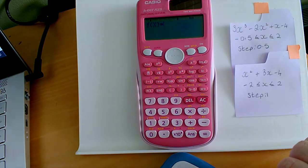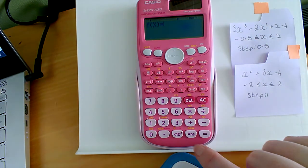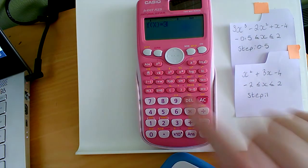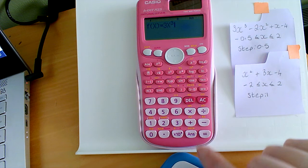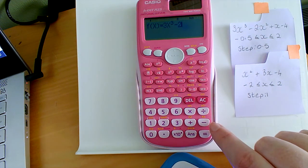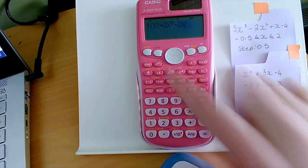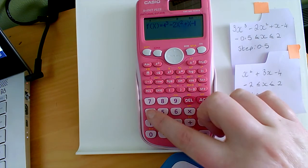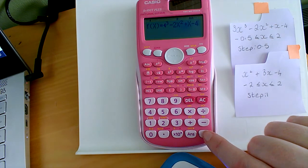You'll see f of x equals pops up, so that's going to be my function that I'm about to input. So the first function that I'm going to input here is this one here. So this is going to be 3 and the x that I'm going to use is alpha bracket. And you'll see that pop up then. It's x cubed, so I'm going to press this button here. Take away 2, make sure you're using the subtraction button here. I want to input another x and then square it. I'm going to add another x and then take away 4. So once your function is inputted, you're then going to press equals.